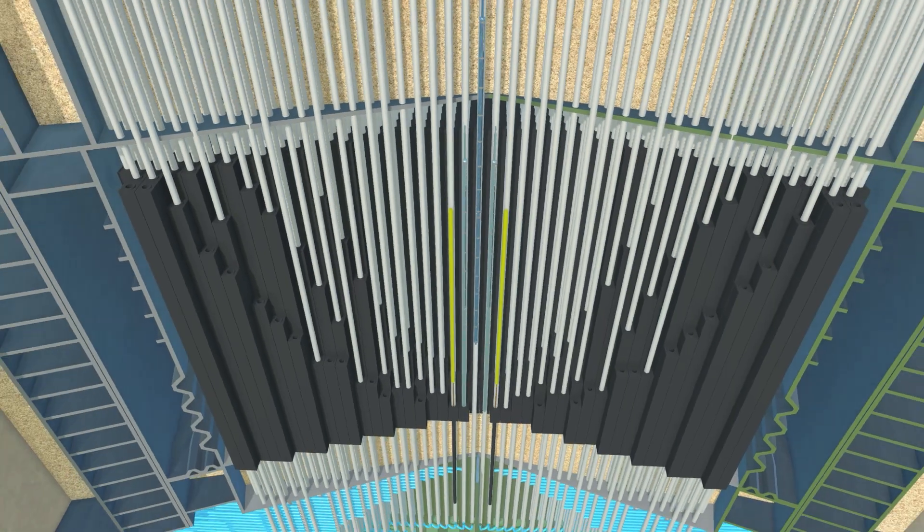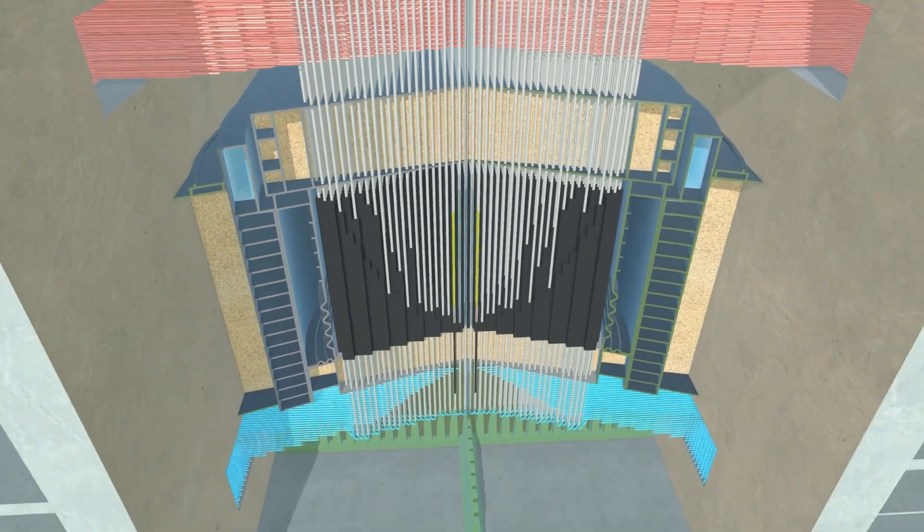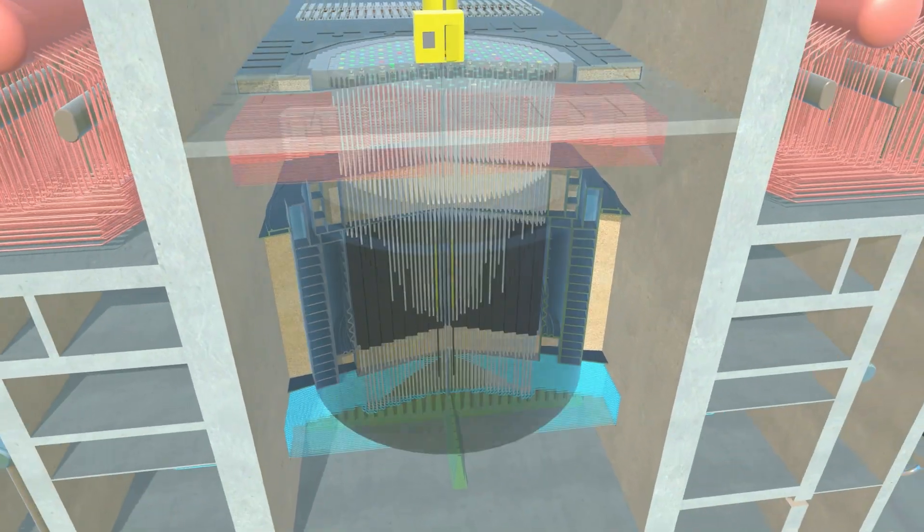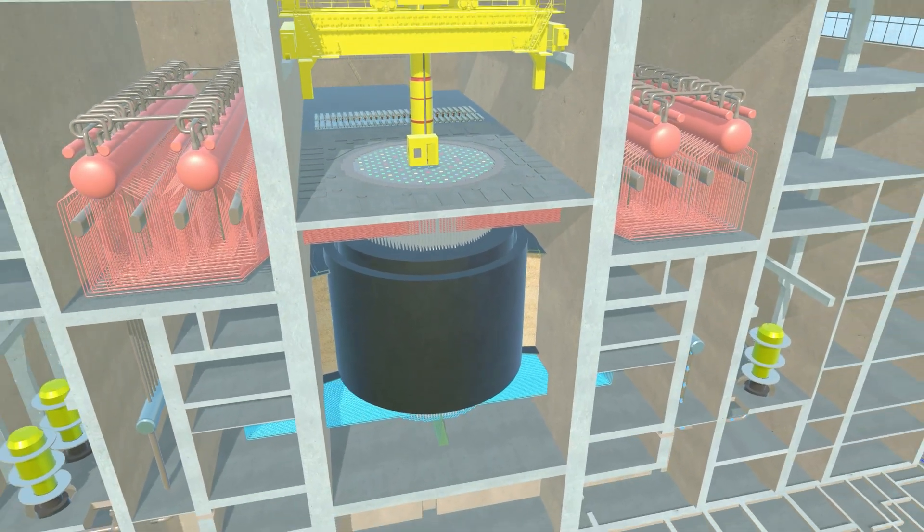Power plants with RBMK boiling reactors are single circuit, which allows for cheaper construction of units and more efficient use of the heat generated.